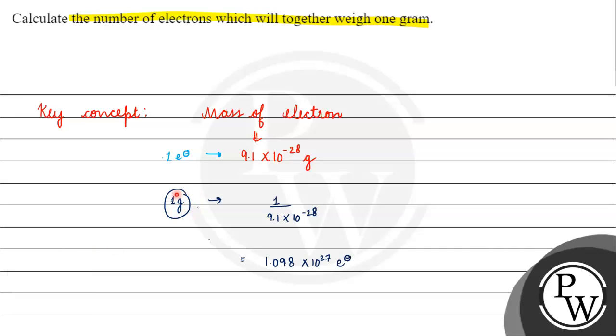If in 1 gram, how many electrons will there be? It will be 1 upon 9.1 into 10 to the power minus 28, which equals 1.098 into 10 to the power 27 electrons.